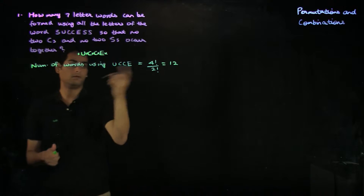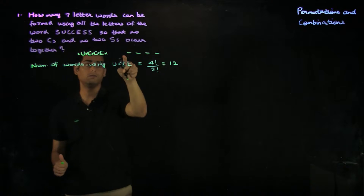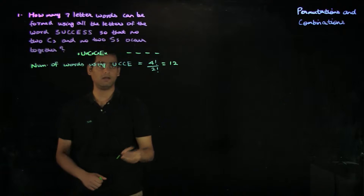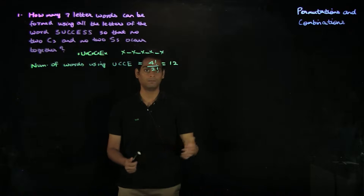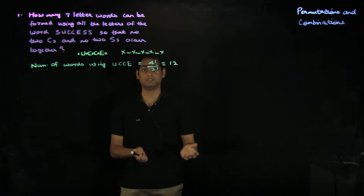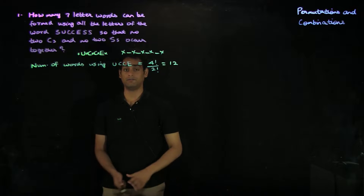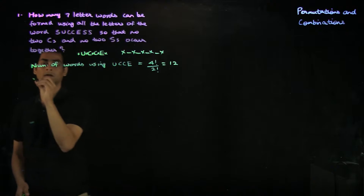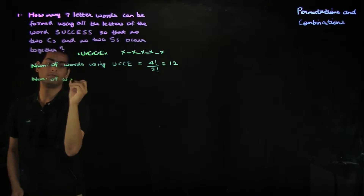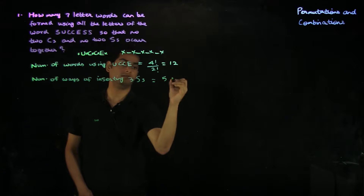Now, once you have formed an arrangement of these four letters — U, C, C, and E — you have five spots in between and around these letters which can accommodate the three S's. Since you do not want any two S's to occur together, you want to place the three S's only in these five spots. If you allow more than one S per spot, two S's will occur together, which violates the condition. So there are five spots for three S's.